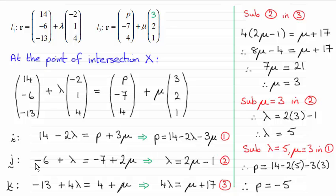Now from equation j I've rearranged it to make lambda the subject, it equals 2 mu minus 1, and similarly from the equation here I've made 4 lambda the subject and it equals mu plus 17.